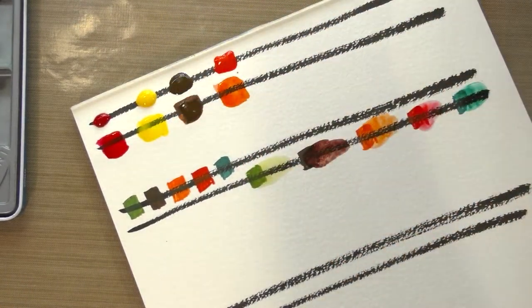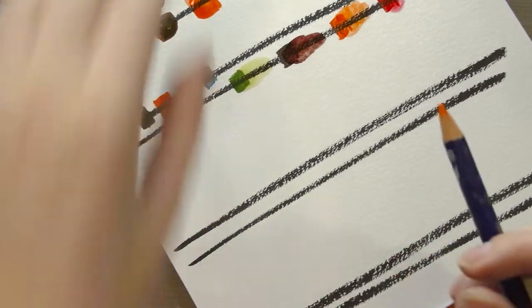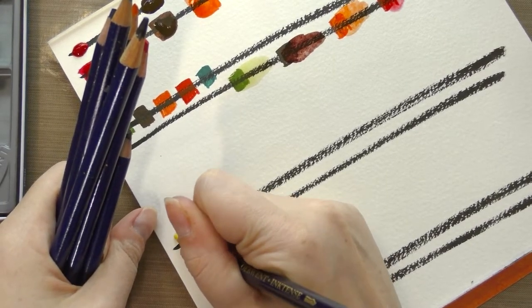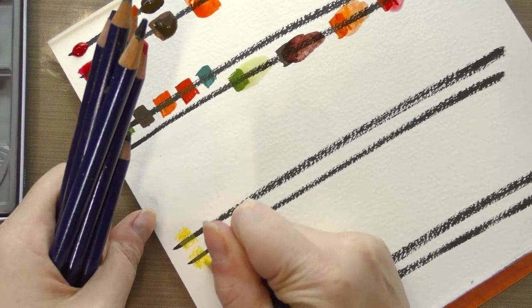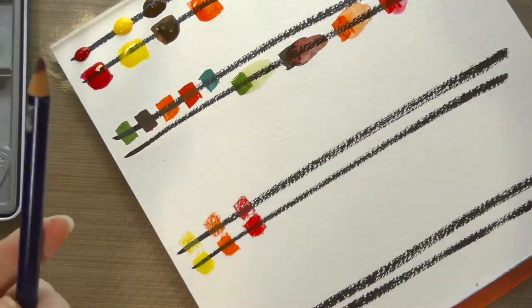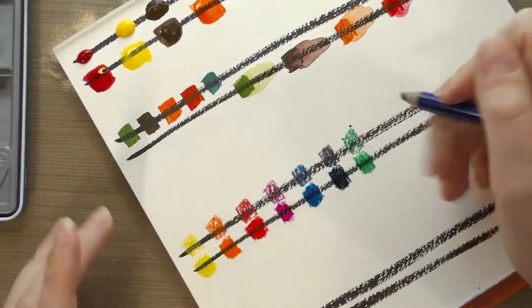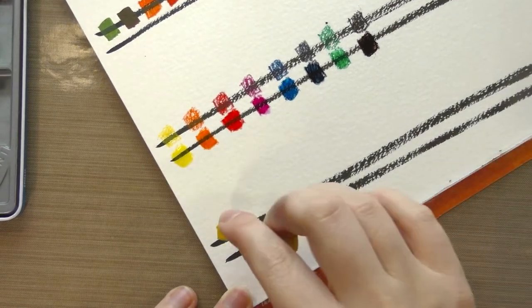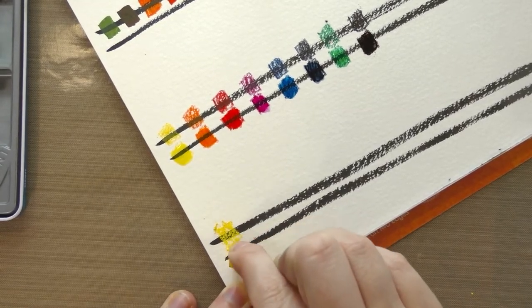All right, next we are going to do the Inktense pencils, and I'll try to do them kind of in chromatic order. So we've got our dry swatch and now we have our wet swatch. And then finally we're going to do our Inktense blocks. We're going to do the same thing - we're going to do a dry swatch and a wet swatch.